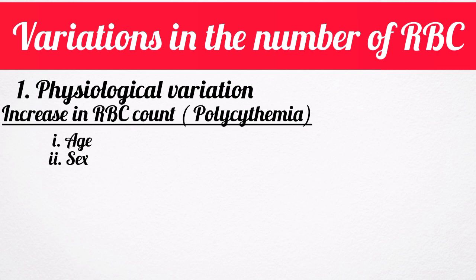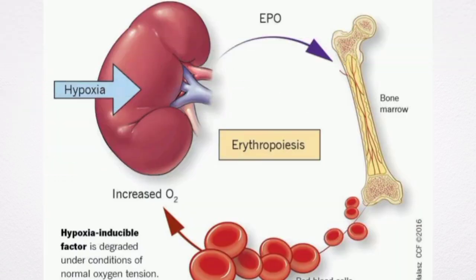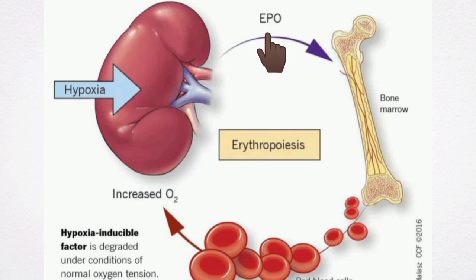Number three is high altitude. Inhabitants of mountains above 10,000 feet from mean sea level have an increased red blood cell count of more than 7 million per cubic millimeter. This is due to a condition known as hypoxia at high altitude. Hypoxia stimulates the kidney to secrete a hormone called erythropoietin. Erythropoietin in turn stimulates the bone marrow to produce more red blood cells.